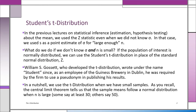William Gossett developed the t-distribution. He wrote under a pseudonym, calling himself 'Student' because he was an employee of the Guinness Brewery and had to use a pseudonym when publishing his results. So basically, in a nutshell, you're going to use the t-distribution when you have small samples and don't know sigma. The t-distribution is very similar to the z — it's a little fatter in the tails, but we'll learn about that in a few minutes.